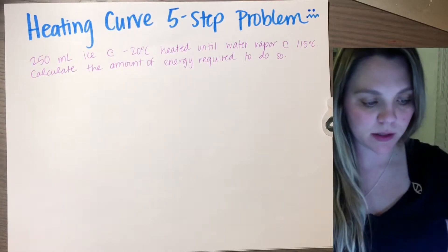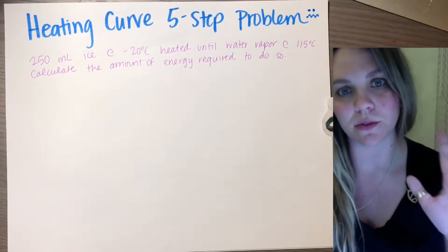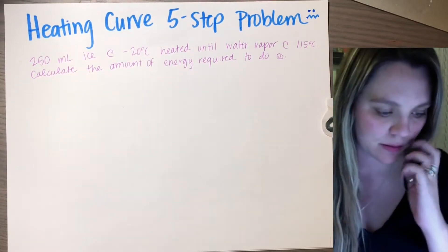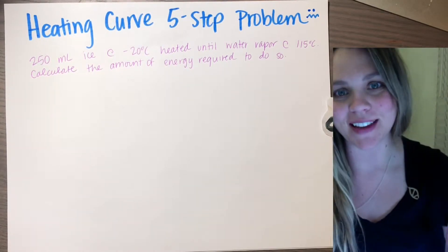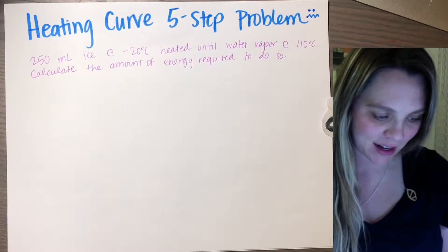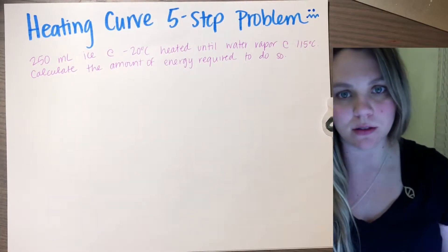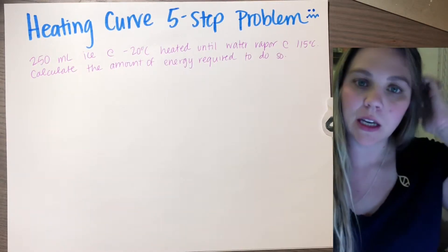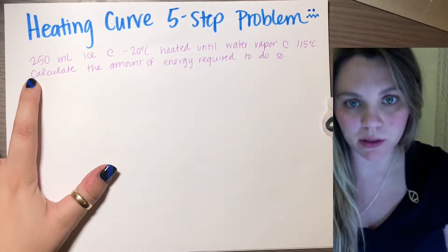All right, so the worst kind of heating curve questions are the ones that are the actual full five steps of the heating curve, because they're the longest. So let's just do the worst kind that you could ever get and get it out of the way. Assuming you already understand how a heating curve works, what kind of equations you use for it, and if you're given a question like this.